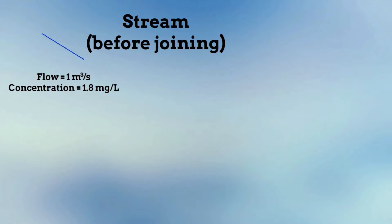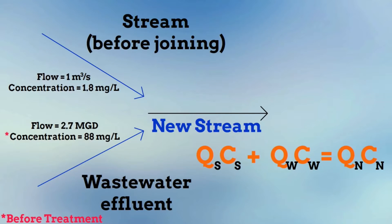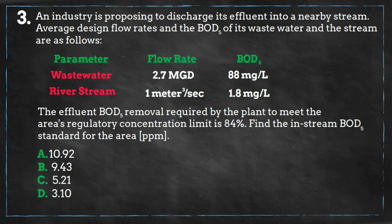We have the first stream, which has a flow rate of 1 cubic meter per second and a BOD concentration of 1.8 milligrams per liter, joining the wastewater stream, which has a flow rate of 2.7 million gallons per day and a BOD concentration of 88 milligrams per liter. Remember that the flow times the concentration of stream 1 plus the flow times the concentration of stream 2 equals the flow times the concentration of the new stream.